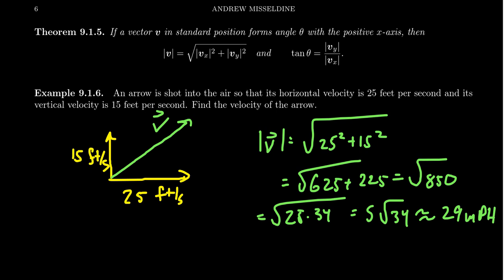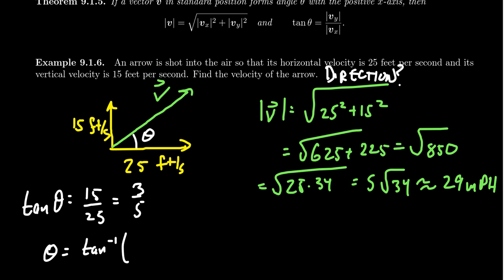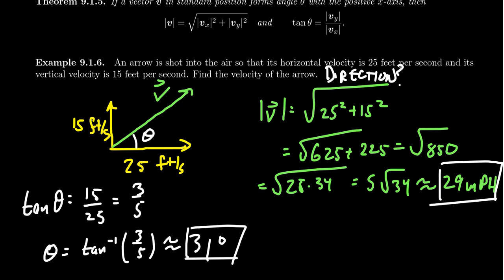What's the direction of this arrow? It makes sense to represent the angle with respect to the horizontal — what angle above the ground is it traveling? Using the tangent ratio, tangent of theta equals 15 over 25. Since 15 and 25 share a common factor of 5, this reduces to 3 fifths. So theta equals arctangent of 3 fifths, which gives us 31 degrees — make sure you are in degrees on your calculator. The arrow is traveling at 29 miles per hour at an angle of 31 degrees above the horizontal.